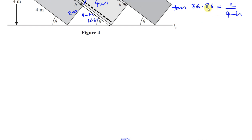We can solve the equation. If these two swap places, 4 minus H is equal to 2 over the tangent of 36.86.